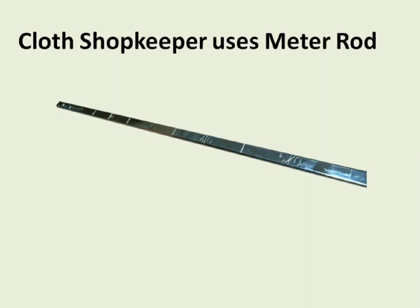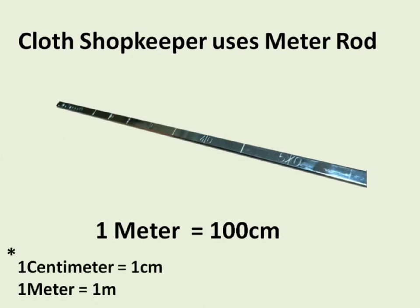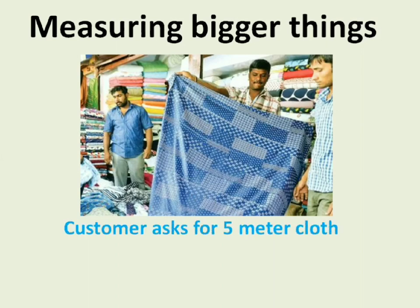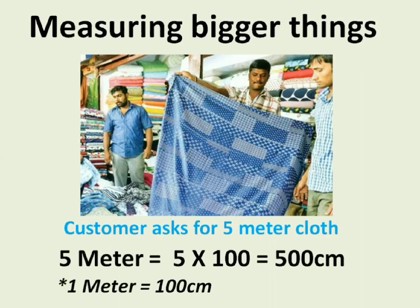You must have visited the cloth shop with your parents and noticed the meter rod there. The salesperson uses this for measuring cloth. Even we can have it at home — not a rod, maybe a rope of hundred centimeter. Because one meter is equal to hundred centimeter. One meter can be written as one m. So let's see some examples. The customer is asking for five meter cloth. Five meter means five into hundred centimeter, that is five hundred centimeter. But it is easy to say five meter cloth than saying five hundred centimeter cloth.